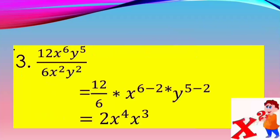Number 3: 12x to the power of 6, y to the power of 5 over 6x to the power of 2, y to the power of 2. In this type of polynomial expression, we separate the coefficient from the variable to solve more easily. So, 12 divided by 6, then x to the power of 6 minus 2, times y to the power of 5 minus 2. This gives us 2 times x to the power of 4 times y to the power of 3.